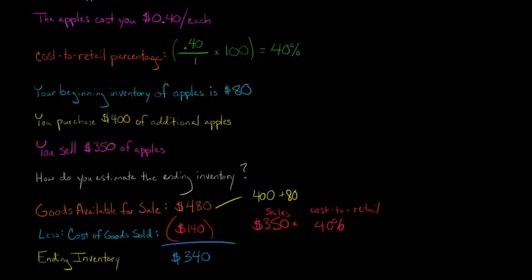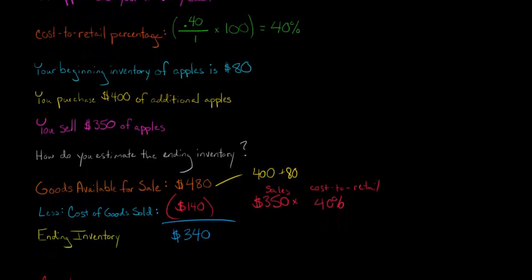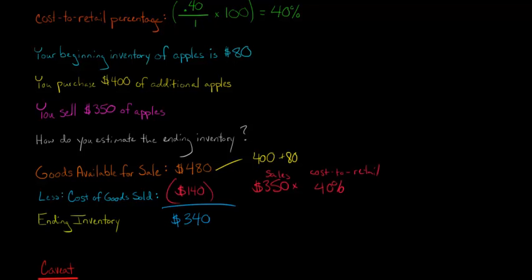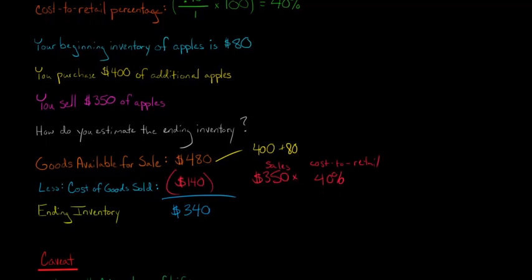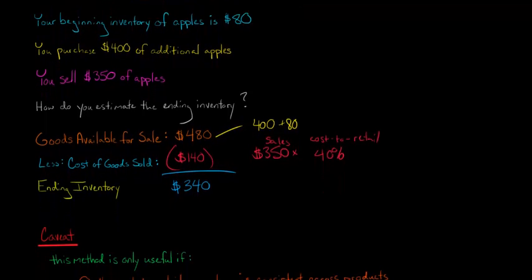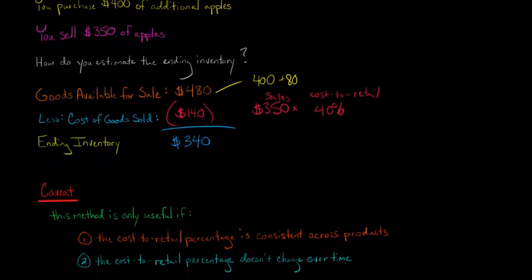So without even having to count our apples and say, how many apples do we have left in the cart, we can just use the cost of retail percentage and get a quick estimate that was really quick, it was really cheap, and say, hey, we have $340 worth of apples in our ending inventory. So if you say, hey, this is a quick and cheap method, why do companies even bother doing an inventory count at the end of the year and so forth? Well, even though it's quick and cheap, it's not the best method, and there's several issues.